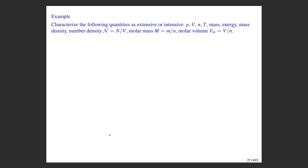Pressure is actually intensive. Imagine two adjacent rooms each at one atmosphere connected by a closed door. When you open the door, the pressure does not change — it remains one atmosphere. So pressure is intensive. Volume, on the other hand, is extensive: combining two rooms doubles the total volume.